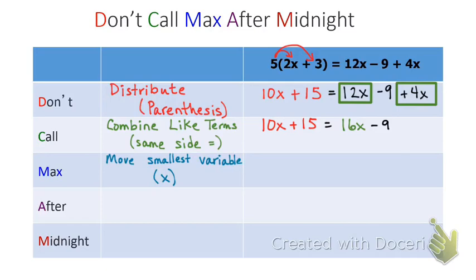So I look at my equation again. I have a 10x on the left side and a 16x on the right side. 10x is smaller so I need to move that. So I want to do the inverse of a positive 10x which would be subtracting 10x from both sides. The 10x's on the left will cancel out and my new equation will say 15 is equal to 6x - 9.